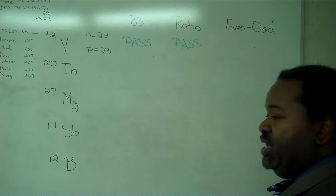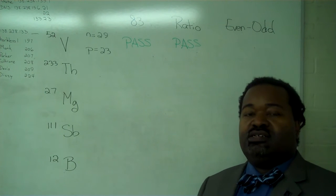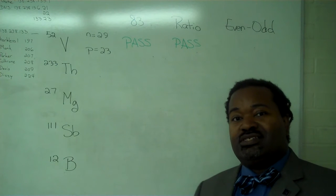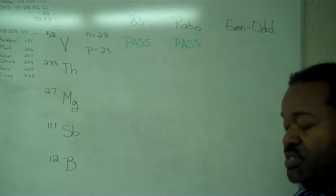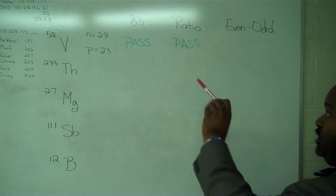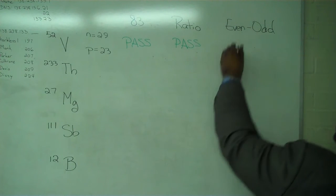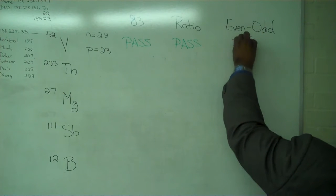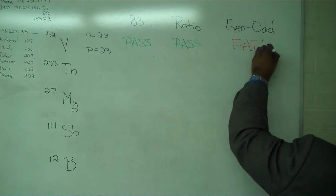And finally, we have the even-odd test. This checks to see if the number of neutrons is odd. With few exceptions, this indicates instability. Because 29 is an odd number, for the even-odd test, this is a fail.